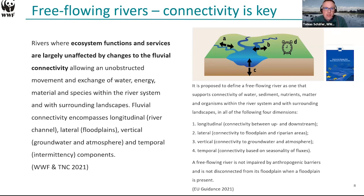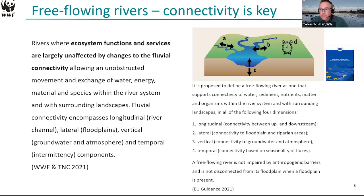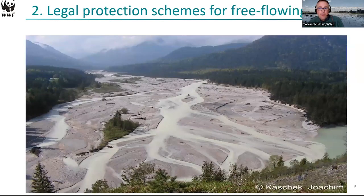This slide shows two definitions of what a free-flowing river is — one is a WWF and The Nature Conservancy definition, and one is from the EU guidance on barrier removal, connected to the EU Biodiversity Strategy. The graph on the right illustrates that there are four dimensions of connectivity: longitudinal, lateral, vertical, and temporal. The guidance document connected to the Biodiversity Strategy stresses that those four dimensions are what we need to look for and aim for when restoring rivers. It's not just about back and forth — it's all four dimensions.